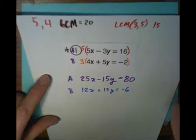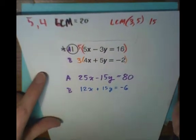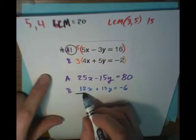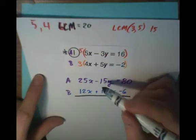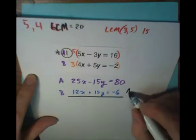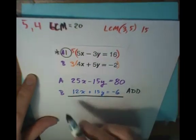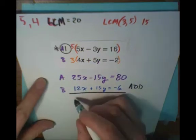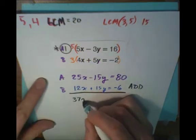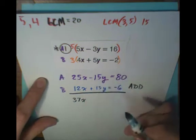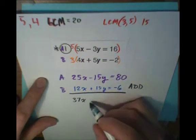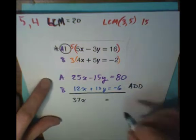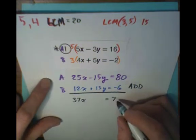And now I'm ready to set up or to perform the elimination by either adding or subtracting these equations. And in this case, because I have a negative 15y and a positive 15y, I'm going to add them. So I'm going to add these equations together. 25x plus 12x is 37x. Negative 15y plus 15y cancels out. And 80 minus 6 is 74.